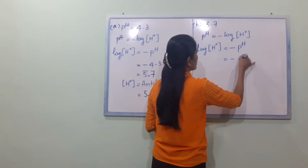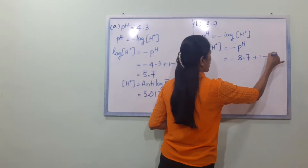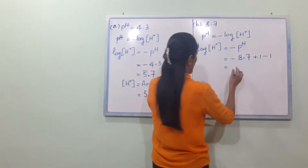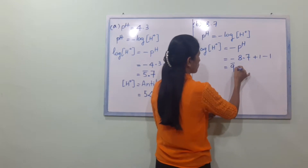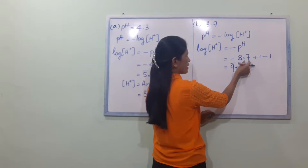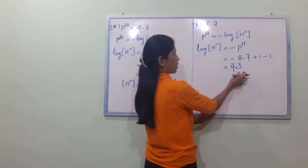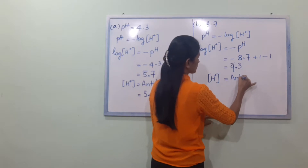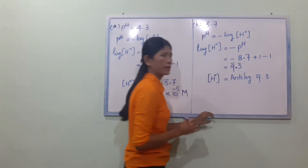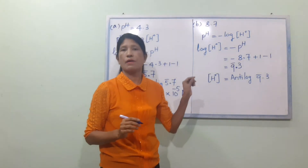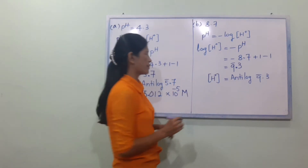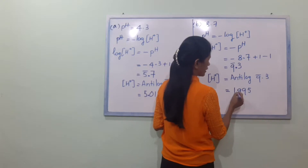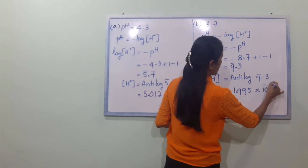Minus pH. So if pH equals A.7 — that is minus 9. The hydrogen ion concentration for B equals 1.995 into 10 power minus 9.